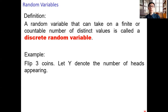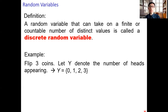For example, you flip three coins. Let the random variable Y denote the number of heads appearing. What possible values can Y take? Y can equal 0, 1, 2, and 3. When Y equals 0, that means there is no head in your three flips. Y equals 2 means you get two heads out of the three flips.